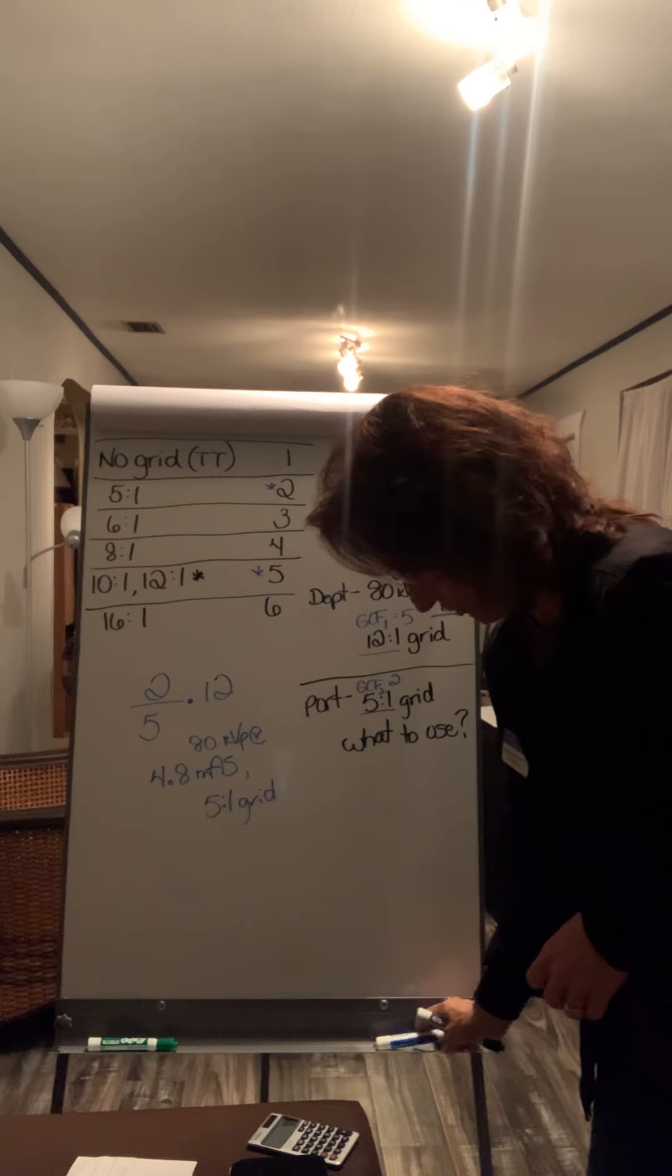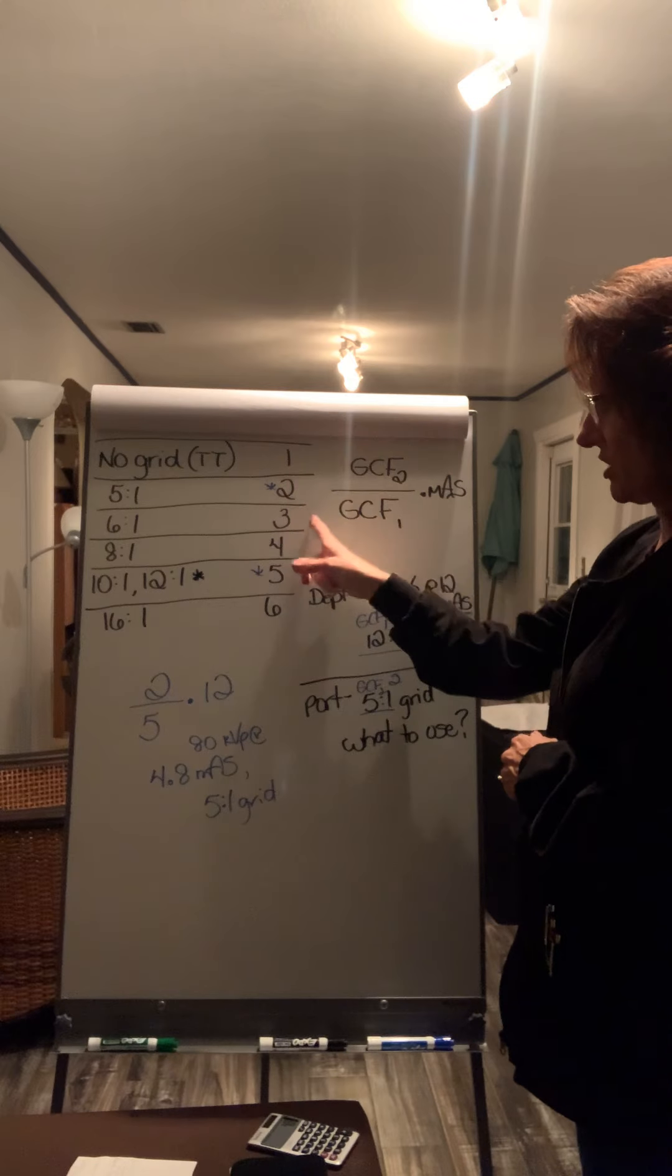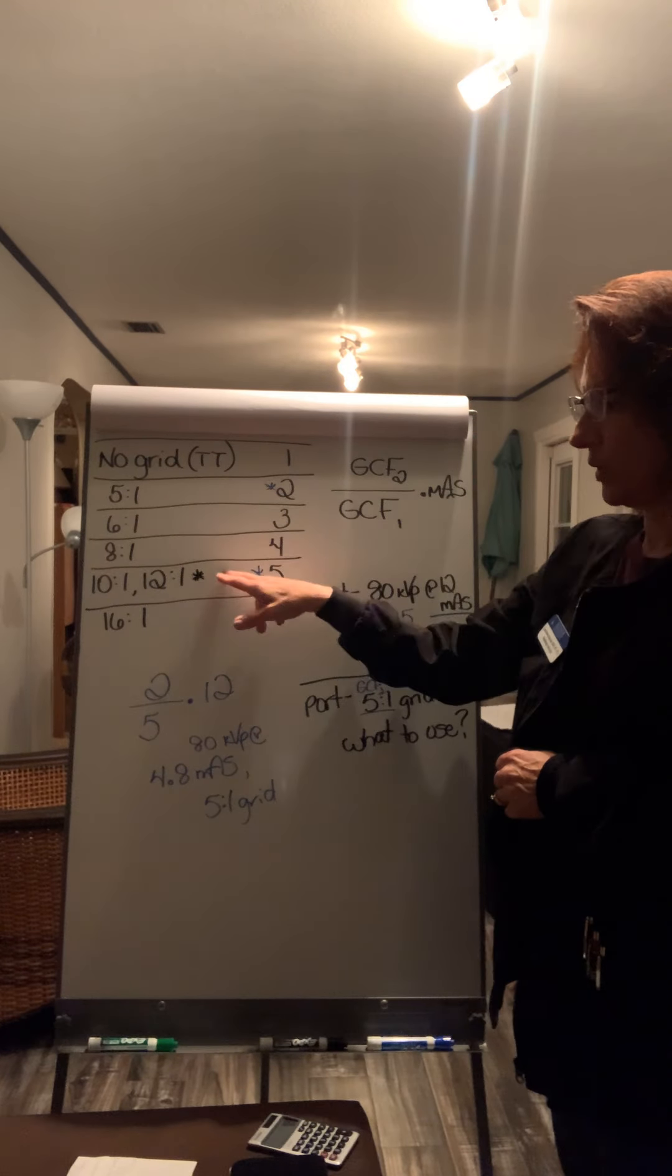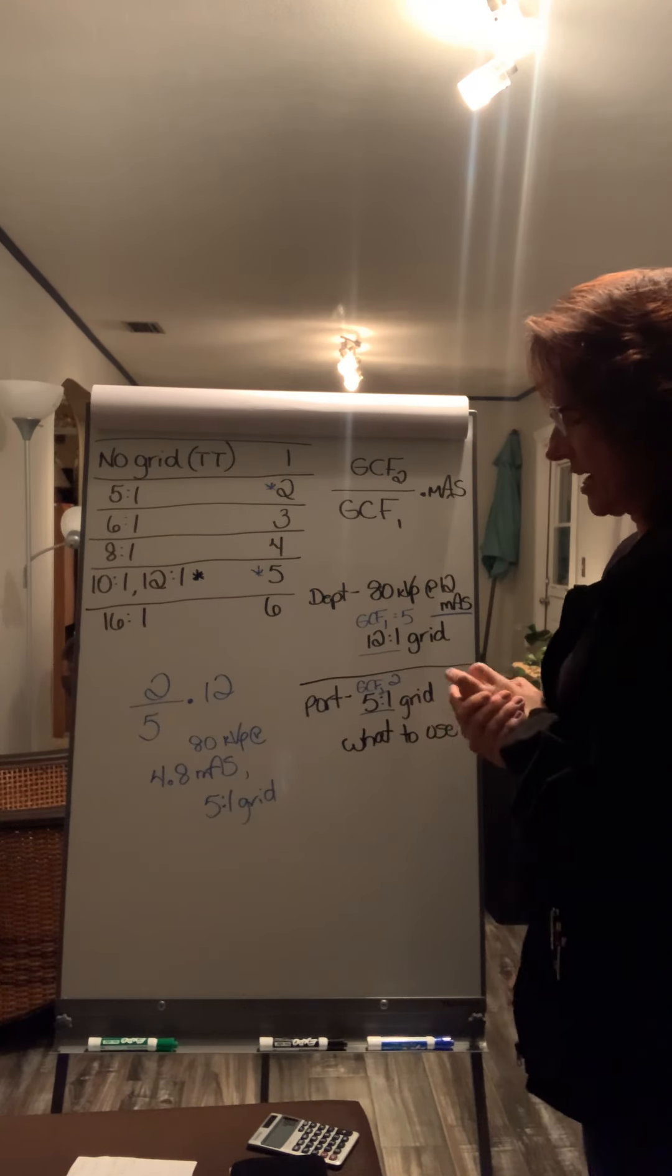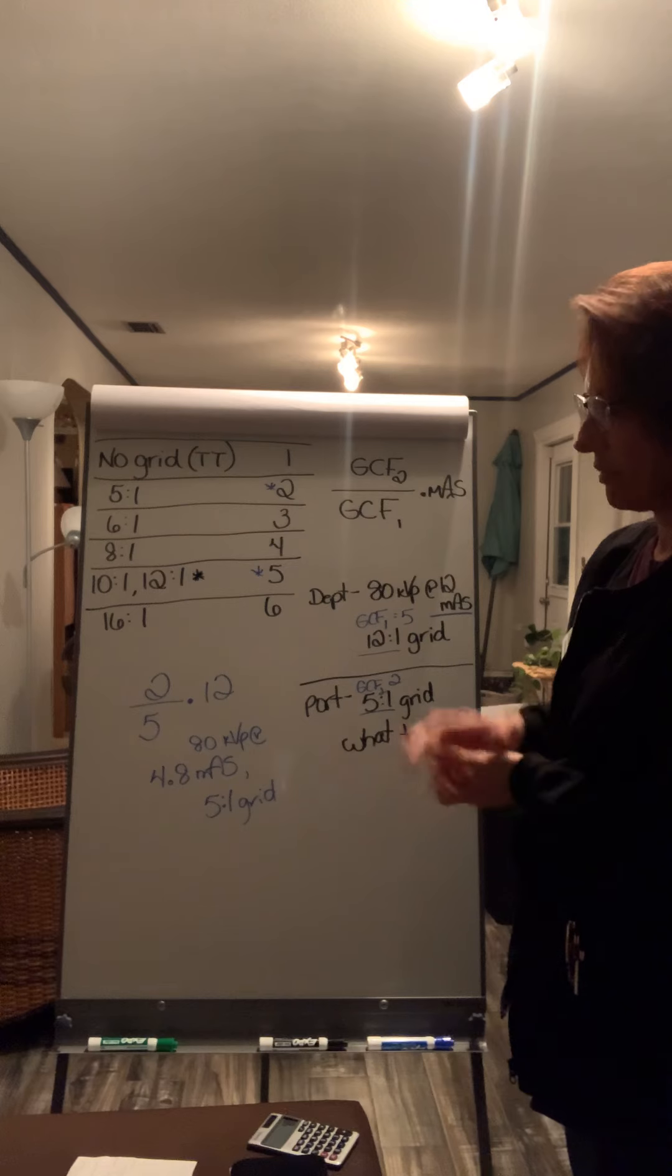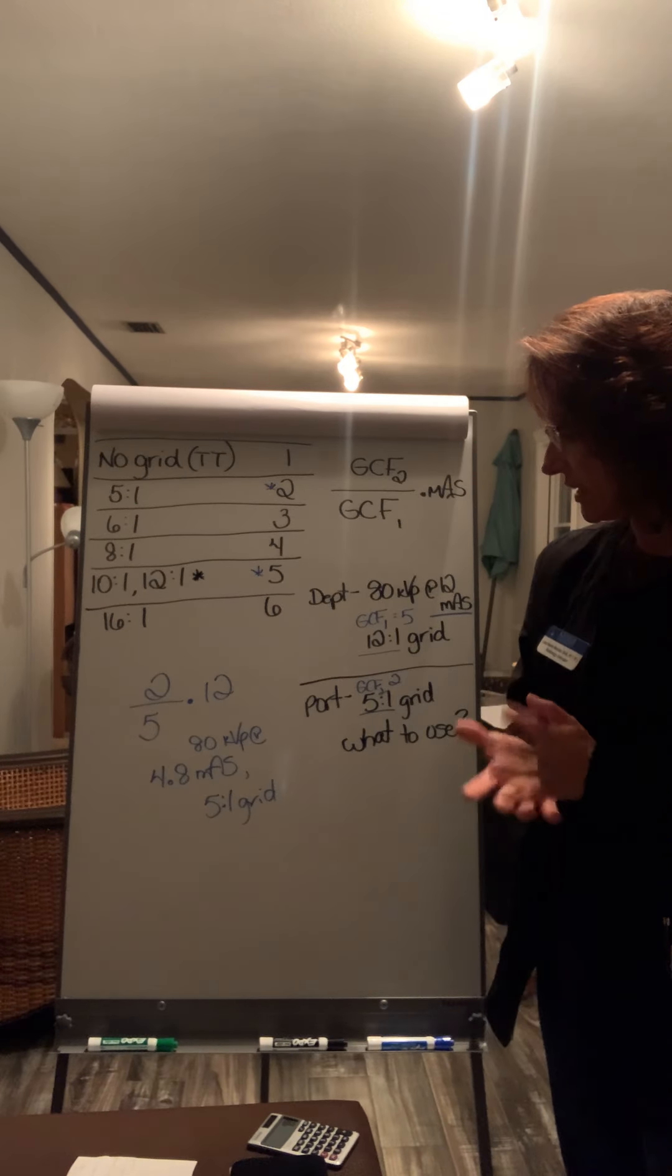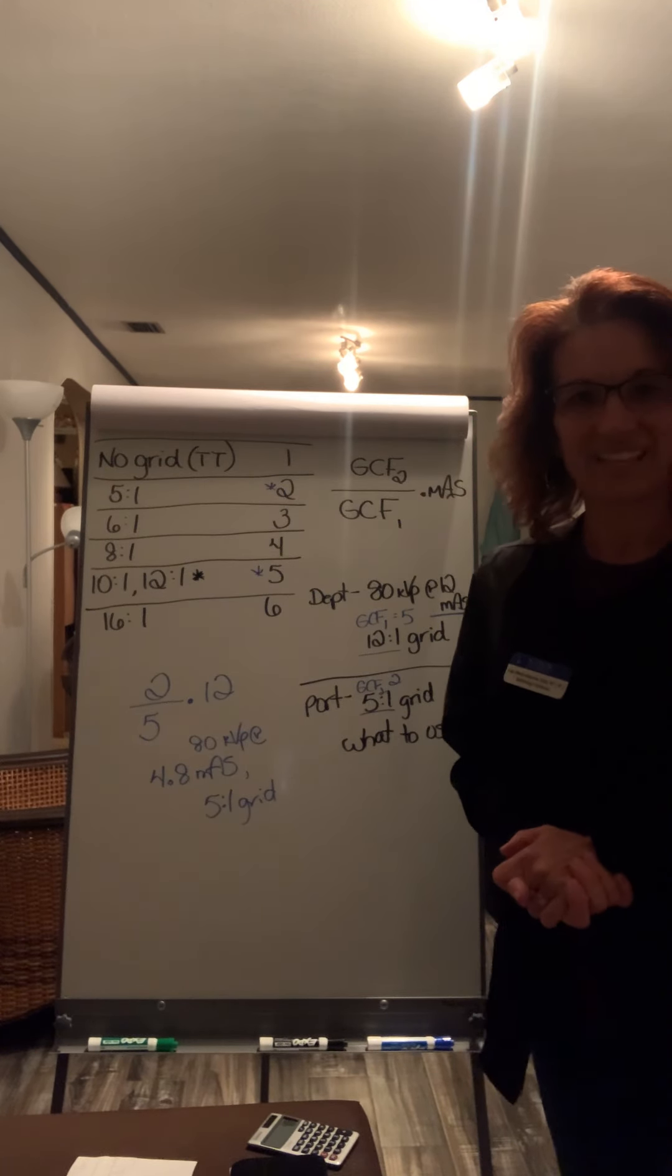And that is the grid conversion formula. Again, this stands for grid conversion factor, which is going to be one, two, three, four, five, or six. And then these are tabletop, five to one grid, six to one, eight, 10 and 12 to one, which are normally our wall buckies and our table buckies. And then a 16 to one grid is the highest grid ratio. Higher grid ratio, more lead, better at scatter cleanup, but you also have to be more precise in your positioning. Hopefully that makes the grid conversion formula make a little bit more sense. And if you have any questions or comments, I'm happy to answer those and try and clear that up. Thank you so much.